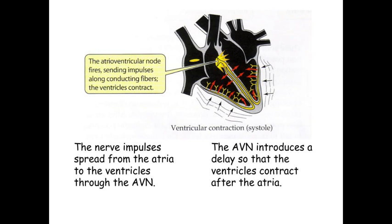After the short delay at the AVN, the wave of excitation then spreads down the bundle of His into the Purkinje fibres, which line the ventricle wall. It causes the ventricles to contract from the apex upwards, which forces the blood from the bottom of the ventricles up through the semilunar valves — which are now open — and into the arteries that take the blood away from the heart. This is ventricular systole. The blood pressure in the ventricles is higher than that of the atria, so the atrioventricular valves close and the semilunar valves open.